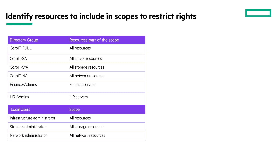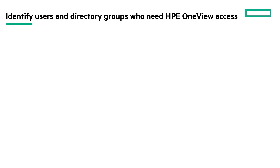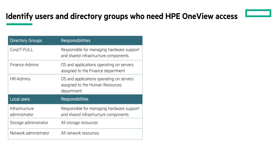Define the set of resources that you want to include in each resource category. Here is the table that shows the mapping of users and groups with resources. For example, in company X, the first district directory group and its equivalent local user, infrastructure administrator, must have access to all the resources. The finance admins group must have access restricted to only the finance servers. Make a list of the groups and local users who need HPE OneView access. Identify categories of users that share similar responsibilities and therefore must have similar rights. For example, corp.it.full is defined as one group category, which needs access to all the server resources for managing hardware support and shared infrastructure components.